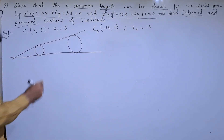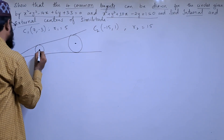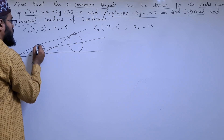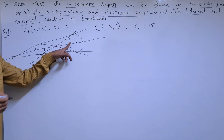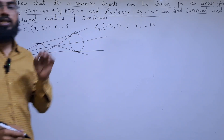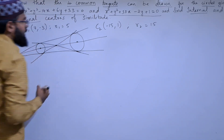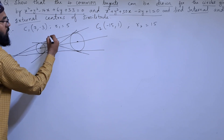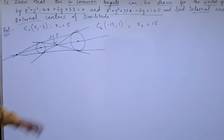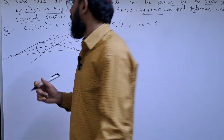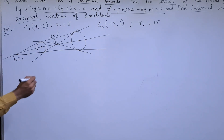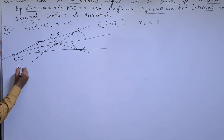Let us draw the diagram. There are two circles with two centers. The lines that are direct are the direct common tangents, and the slant ones are the transverse common tangents. The point where the transverse common tangents meet is the internal center of similitude, and the point outside where the direct common tangents meet is the external center of similitude.